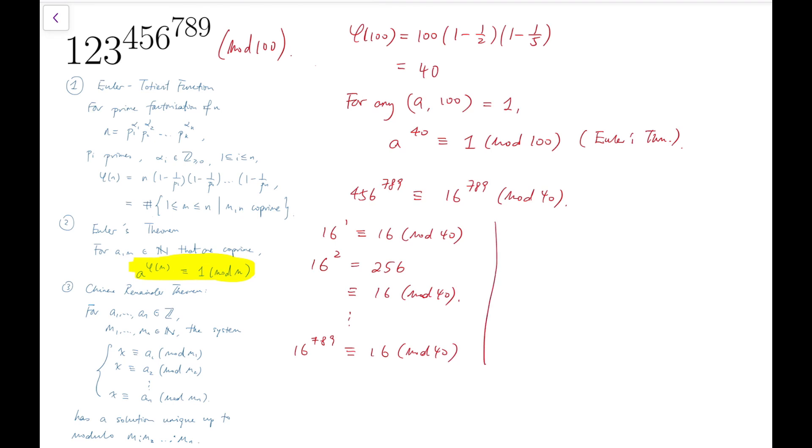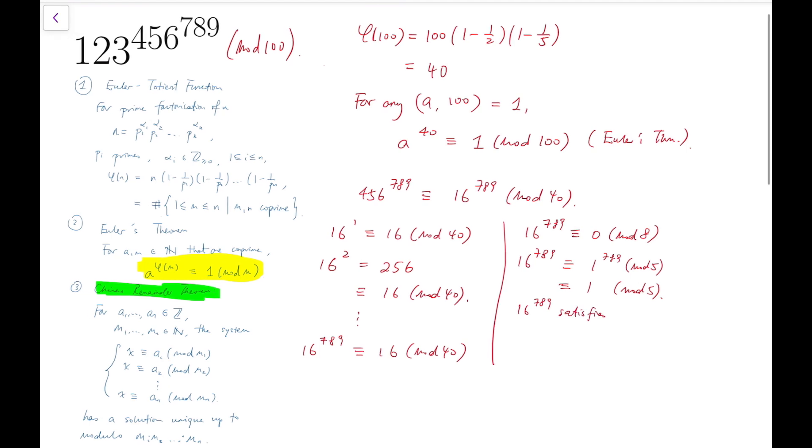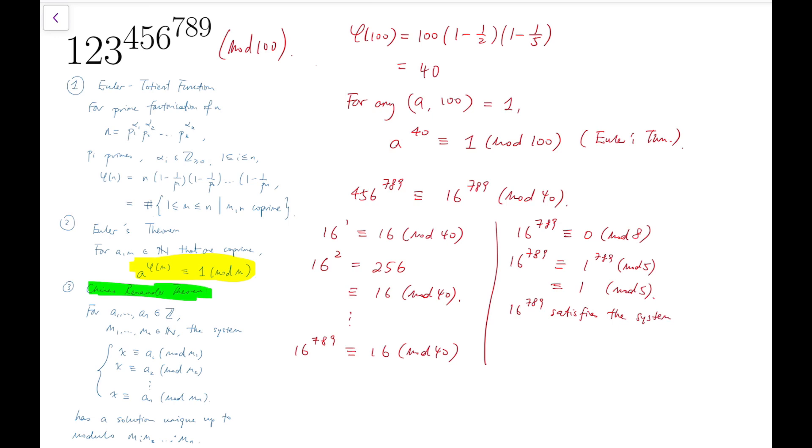And our second method is to make use of the Chinese Remainder Theorem, which is to split mod 40 into a system of equations. So first, I'm going to compute mod 8 and then mod 5. They are both very easy, because 16 is clearly a multiple of 8, which makes this power congruent to 0 mod 8. And at the same time, because 16 itself is congruent to 1 mod 5, so the whole power is also congruent to 1 mod 5.